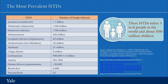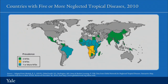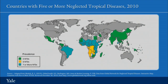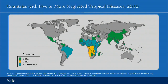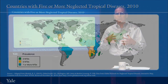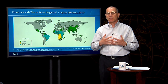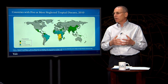Now let's look for a second at the endemicity of these diseases and the countries in which you find them. This graphic shows a map of different endemicity scenarios — countries in which one might find five, six, seven, or more of these diseases to be endemic. Countries in green have five NTDs, those in yellow have six, and those in blue have seven or more NTDs. It's really important to understand how widespread these diseases are and what a large share of some populations is infected.